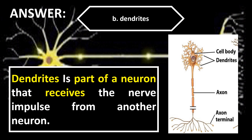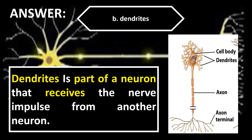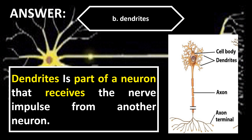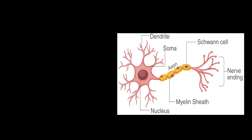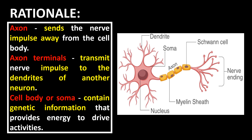The correct answer is letter B, Dendrites. Dendrites are the part of a neuron that receives the nerve impulse from another neuron. The axon sends the nerve impulse away from the cell body. Axon terminals transmit the nerve impulse to the dendrites of another neuron. The cell body or soma contains genetic information and provides energy to drive activities.